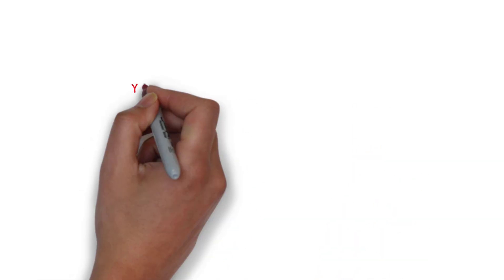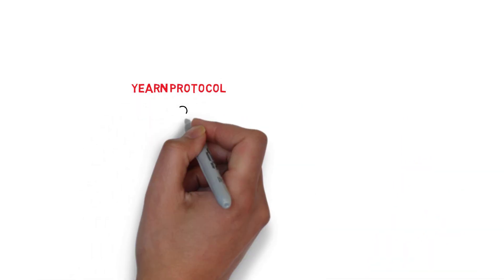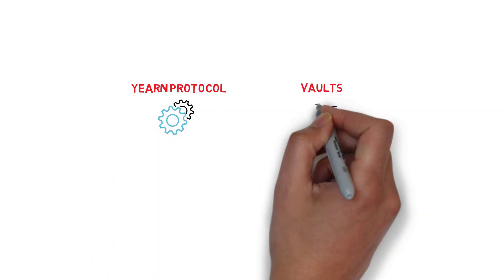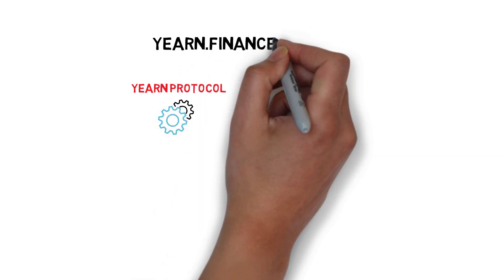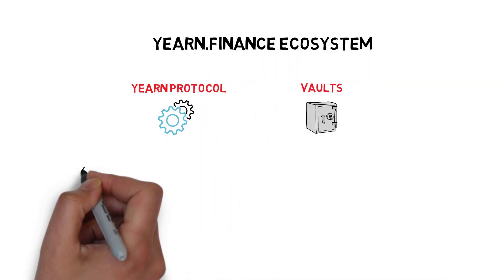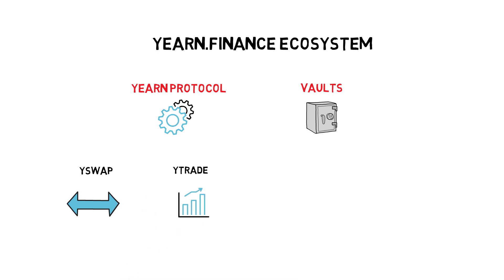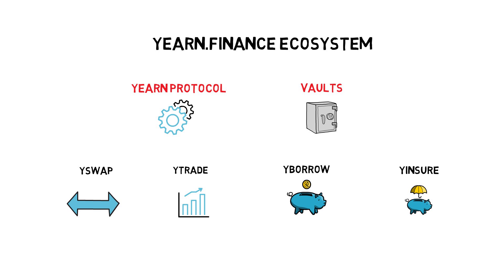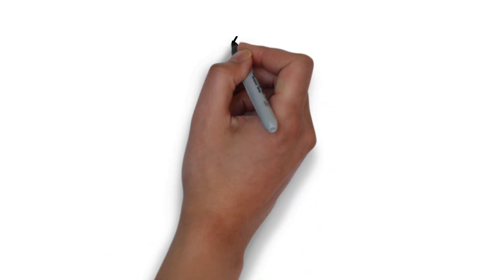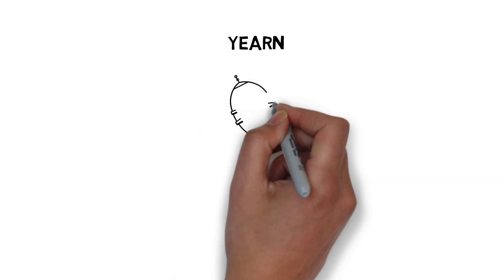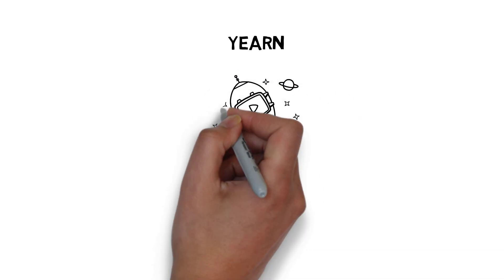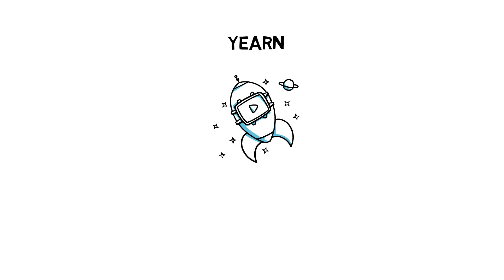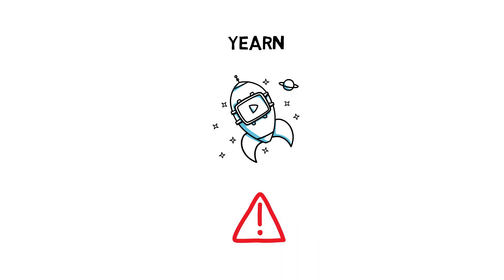The YFI token is extensively used in Yearn governance to decide on the future of the protocol, with one of the most active and loyal communities in the whole DeFi space. There is also a lot of speculation on the potential future revenue from YFI tokens that fuels the price appreciation. Although the Yearn protocol and, most recently, the vaults are at the core of the Yearn Finance ecosystem, there are also other services such as ySwap, yTrade, yBorrow, and yInsure. Yearn is clearly one of the most interesting protocols in the DeFi space, but like everything else in DeFi, always make sure to understand the associated risks before using any protocol.